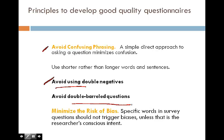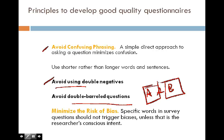Double-barreled questions are another issue we need to avoid. Double-barreled questions put two questions into one — usually a part A and a part B. For example: 'Should we stop listening to rock and roll and start listening to traditional music?' The best way to deal with that is to split these two parts into two separate sentences, which avoids the double-barreled problem.